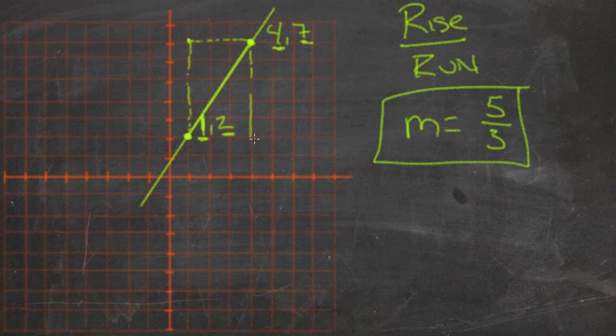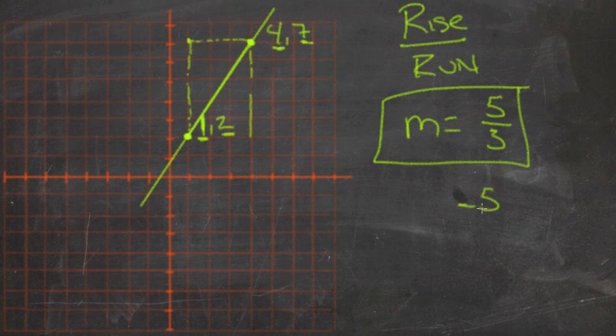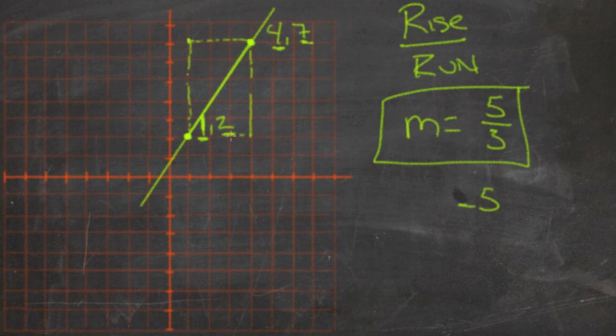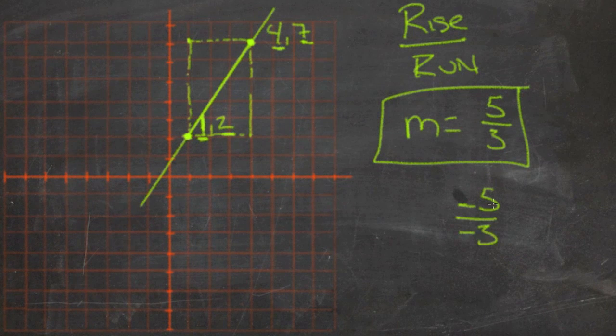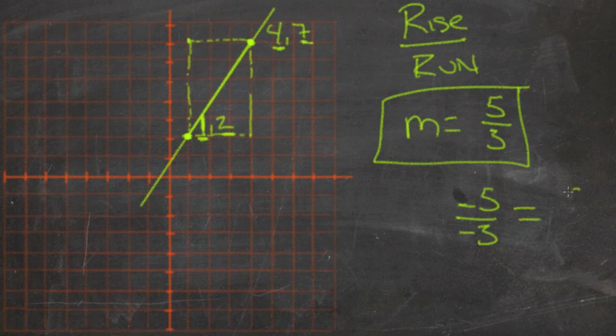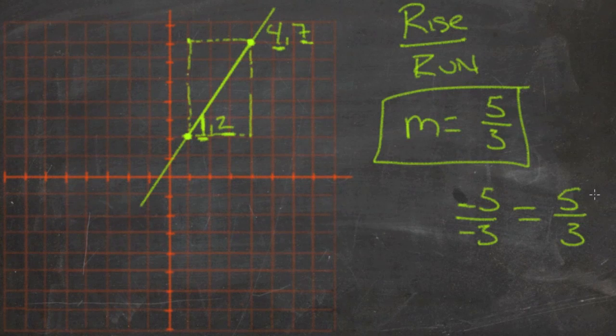We would rise negative 5 points. And our run then would be negative, negative 3 points. And negative 5 divided by negative 3 is still the same, 5 over 3, since a negative divided by a negative is a positive.